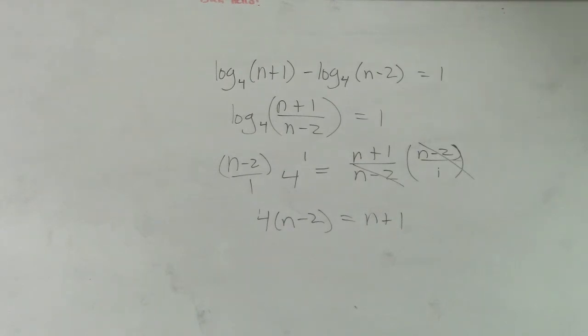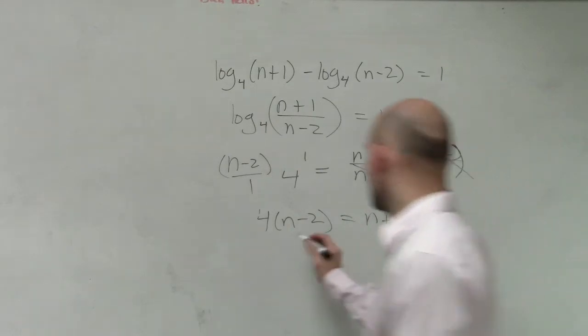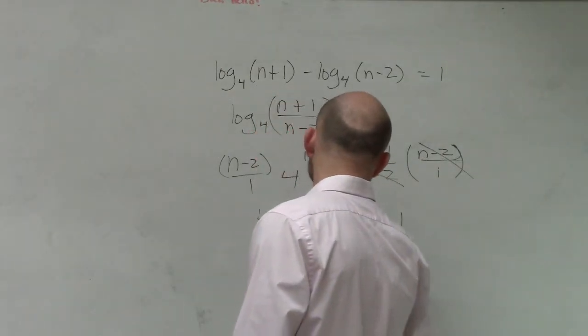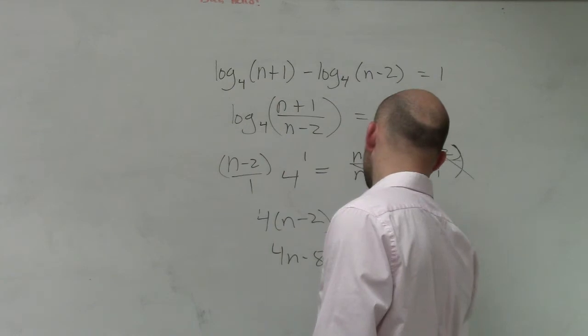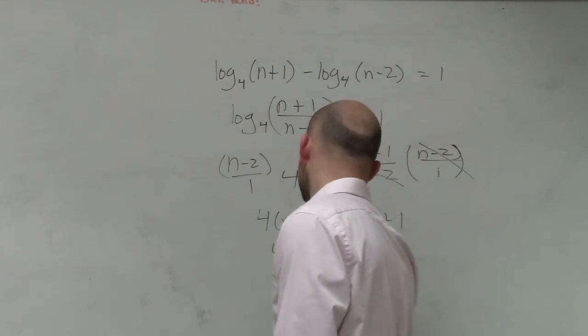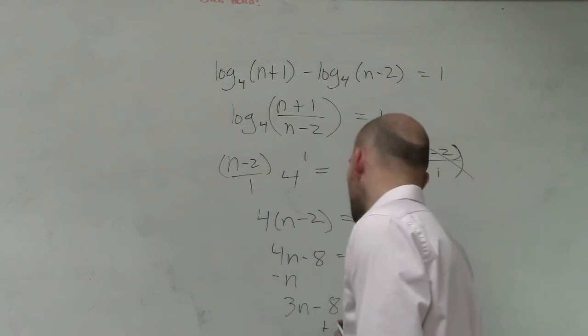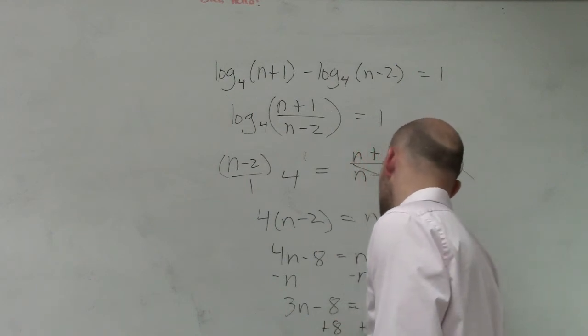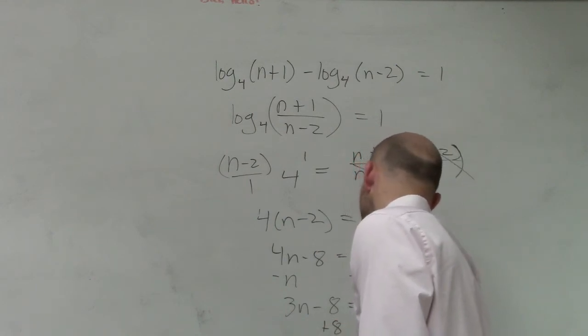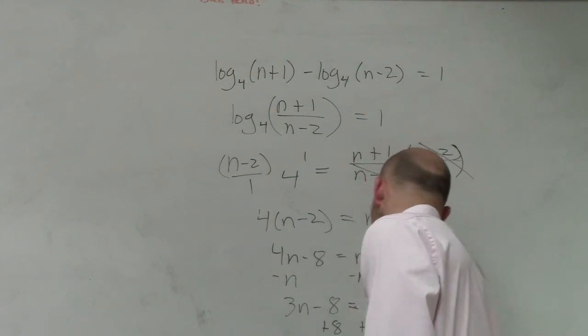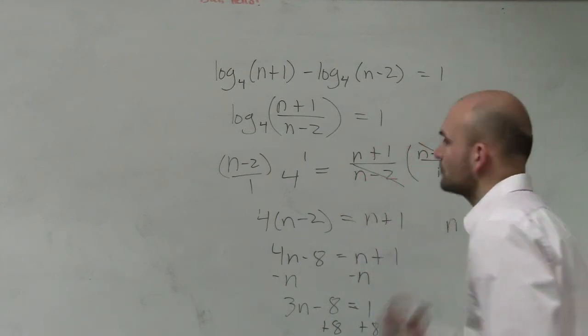So now to solve for n, we need to simplify both sides and then get the n by itself. So therefore, I have 4n minus 8 equals n plus 1. Minus n, get 3n minus 8 equals 1. Add 8, 3n equals 9, divide by 3, n equals 3.